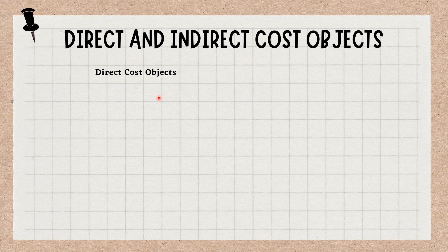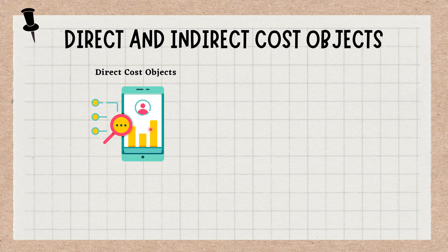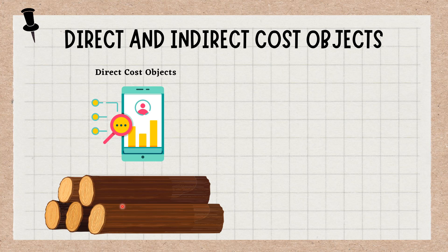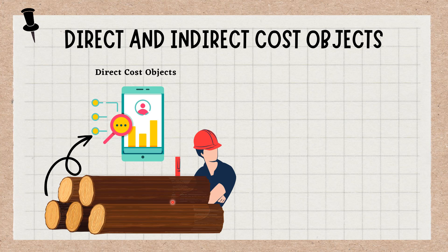Direct cost objects are expenses that can be traced directly to a specific product or service. For example, the cost of raw materials used in the manufacturing of a product is a direct cost object because it can be directly linked to the production of that item. Other examples include labor costs for specific employees who work on a particular project, or the cost of a marketing campaign for a specific product.